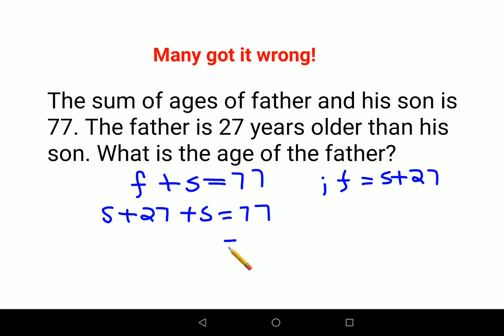Here we get 2s and 77 minus 27 gets you what? 50. So son's age when divided both sides by 2 you will get it as what? 25. So now therefore I can say father's age is what?